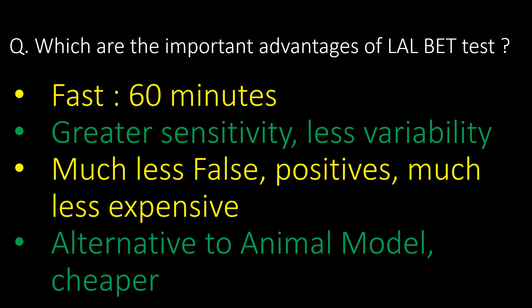What are the important advantages of the LAL-BET test? Here are four major advantages. First, it takes only about 60 minutes to complete. Second, it offers greater sensitivity and less variability. Third, this test has much fewer false positives and is much less expensive. Fourth, it is an alternative to animal models and is a cheaper test overall.